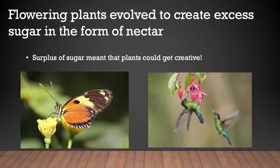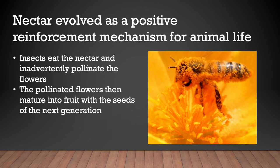Flowering plants evolved to create excess sugar in the form of nectar, and this surplus sugar meant that plants could get creative. Very much like human civilization where agriculture created a surplus of calories, when plants had a surplus of calories, they incorporated other forms of biological life to do the work of reproduction for them. So nectar evolved as a positive reinforcement mechanism for animal life. Insects eat nectar and inadvertently pollinate the flowers. You can see the little bee taking a drink of the nectar and getting absolutely covered in pollen from the flower. That bee is going to take it to the next flower and has no idea that it's participating in this process.